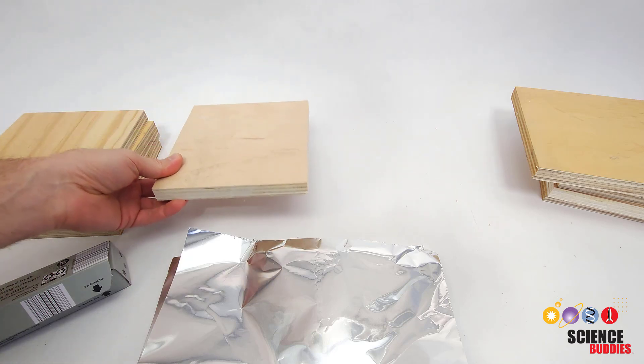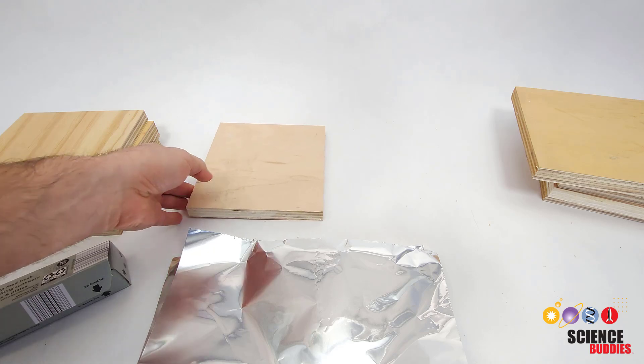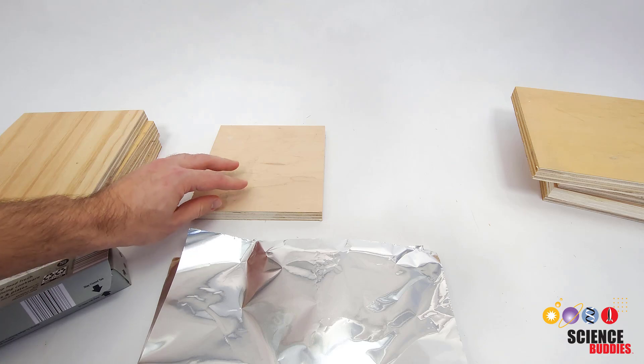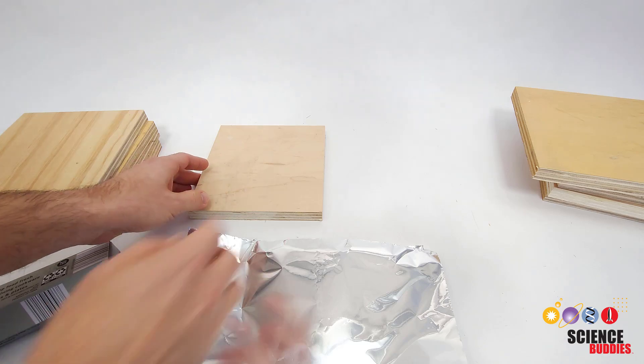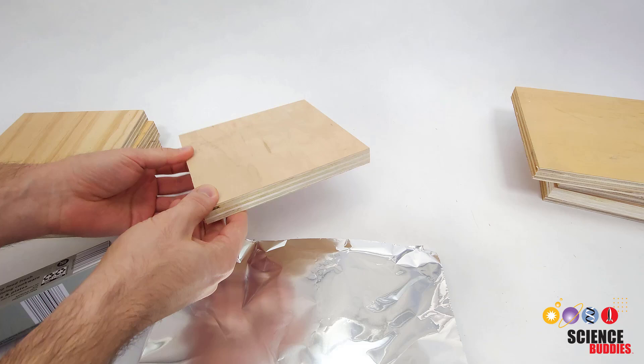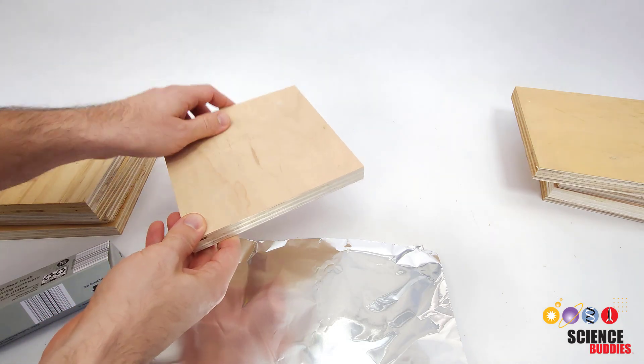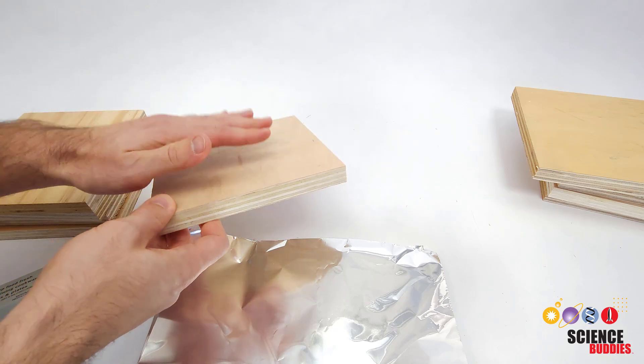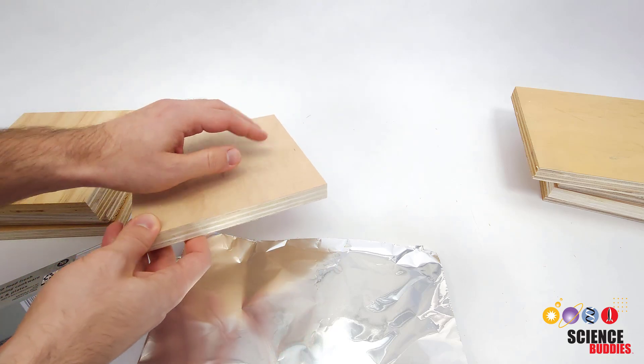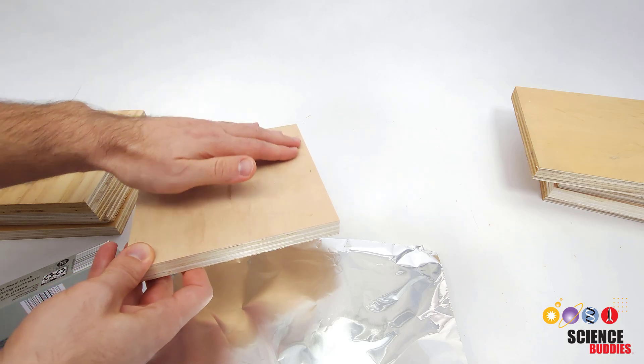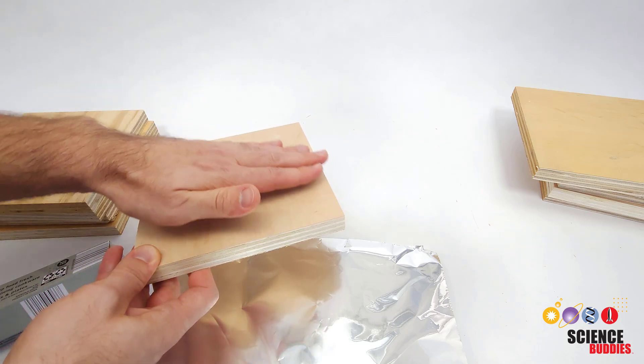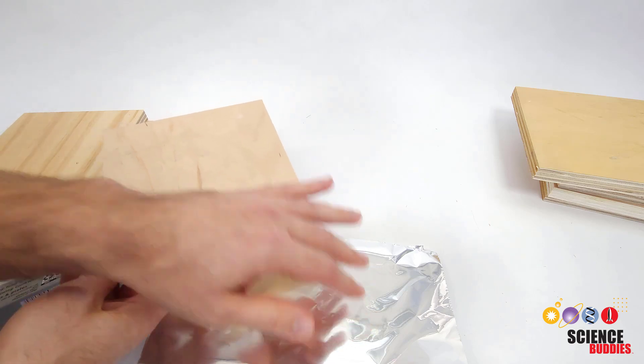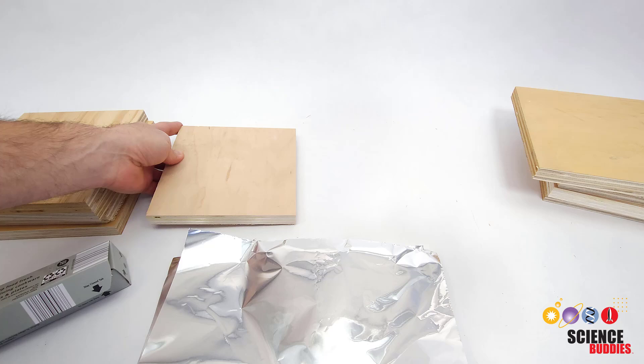You will need at least 10 plywood squares. The exact size doesn't matter, but something in the range of 6 to 12 inches per side should work well. What's important is that these squares are smooth and flat. You don't want them to be warped because we're going to make a sandwich of plywood and aluminum foil, and you want the aluminum foil to be clamped very evenly along the edges. If the wood is warped, you're gonna have uneven pressure and it's not gonna hold the aluminum foil in place evenly on both sides.